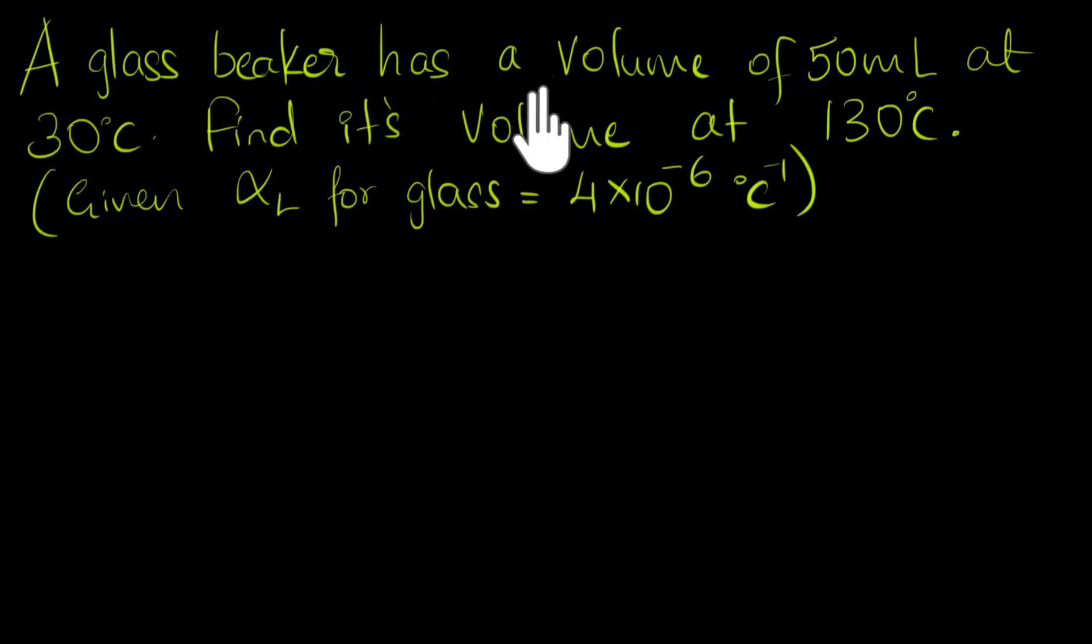A glass beaker has a volume of 50 ml at 30 degrees Celsius. Find its volume at 130 degrees Celsius given linear expansion coefficient for glass is 4 times 10 to the minus 6 per degree Celsius.